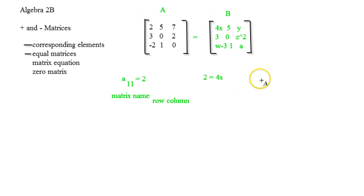If you notice the 5 corresponds with the 5, pretty easy. And then 7 corresponds with the y, so 7 equals y. The 3 and the 0 are all corresponding, and then I would have another equation where 2 equals z squared.